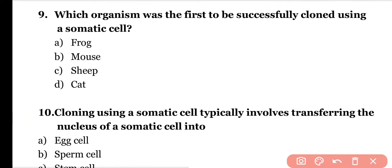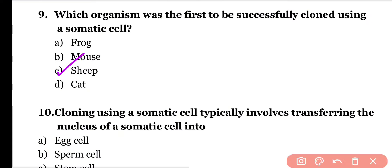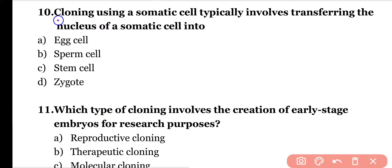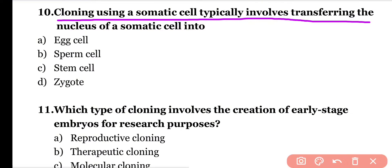Question number nine: Which organism was the first to be successfully cloned using a somatic cell? Options: frog, mouse, sheep, cat. Correct answer is option C — Dolly the sheep was the first organism cloned using a somatic cell. Mouse was also cloned using a somatic cell, but sheep was the first.